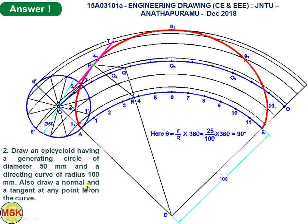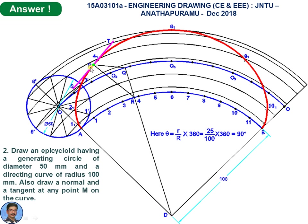The second part of the question is to draw a normal and tangent at point M (which I use as P). Mark P somewhere on the epicycloid. With 25 mm as radius, cut an arc on the arc passing through center O with D as center, and mark that point as Q. Draw line QD; it gives intercept R on arc AB. Line RP is the required normal. Draw a perpendicular to RP — that is the tangent ST.